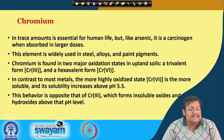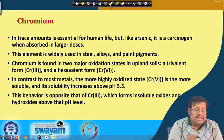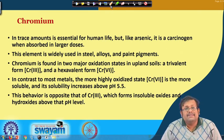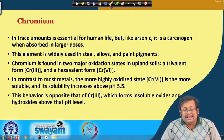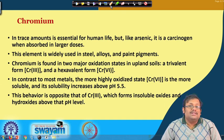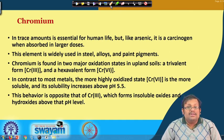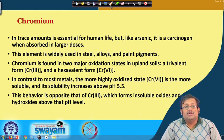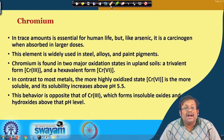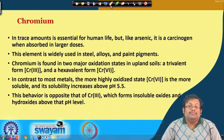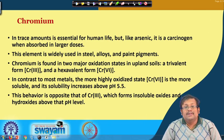Chromium is also very important. In trace amounts it is essential for human life, but like arsenic it is a carcinogen when absorbed in larger doses. This element is widely used in steel alloys and paint treatments. Chromium is found in two major oxidation states: trivalent (Cr³⁺) and hexavalent (Cr⁶⁺). In contrast to most metals, the more highly oxidized hexavalent state is more soluble, and its solubility increases above pH 5.5 — opposite to trivalent chromium, which forms insoluble oxides and hydroxides above that pH level.